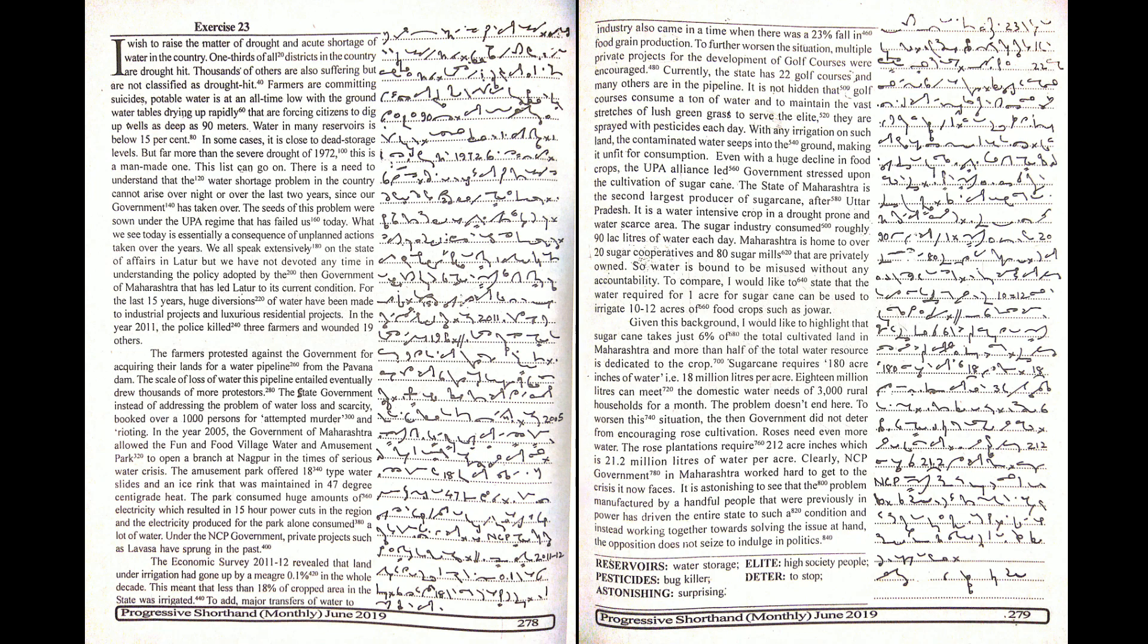To compare, I would like to state that the water required for 1 acre of sugar cane can be used to irrigate 10-12 acres of food crops such as jowar. Given this background, I would like to highlight that sugar cane takes just 6% of the total cultivated land in Maharashtra and more than half of the total water resource is dedicated to the crop. Sugar cane requires 180 acre-inches of water, that is 18 million liters per acre.